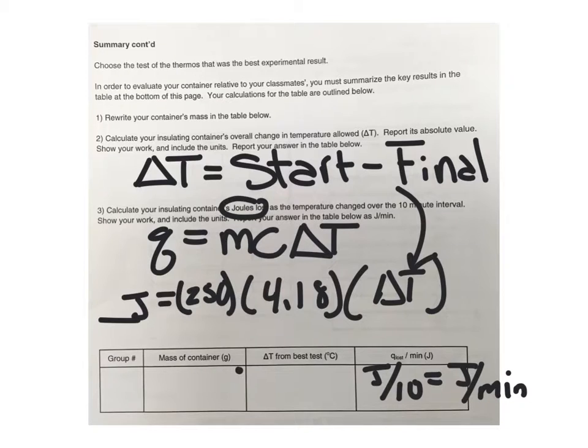Put your mass of your container and the delta t of your container from your best test on the board behind the sub at the front of the room so that other teams can use your data to plot the bar graphs coming next.